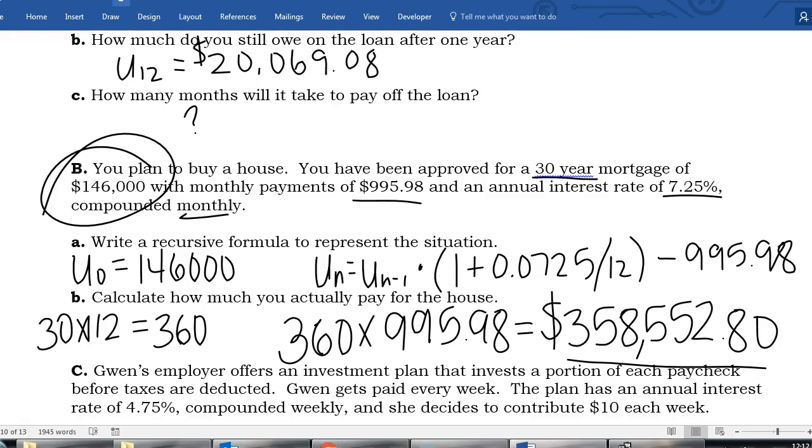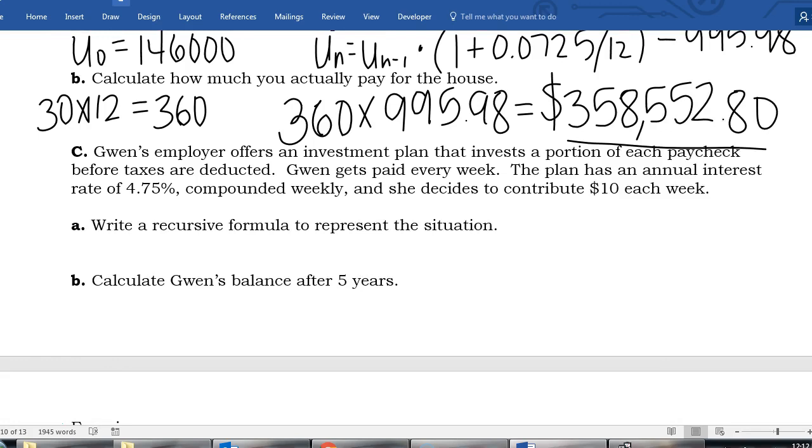Okay we have one final example. Gwen's employers offer an investment plan that invests a portion of each paycheck before taxes are deducted. Gwen gets paid every day. The plan has an annual interest rate of 4.75% compounded weekly and she decides to contribute $10 each week. We're going to write a formula. First we need our u0. Since this is a brand new account there's no money in this account so our starting value is zero dollars, but we're going to add money to it in this investment.